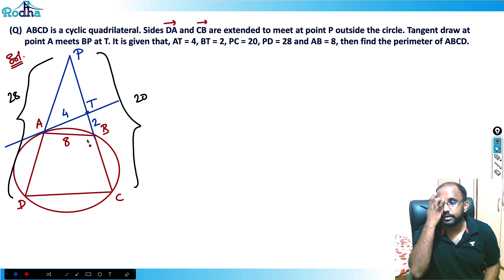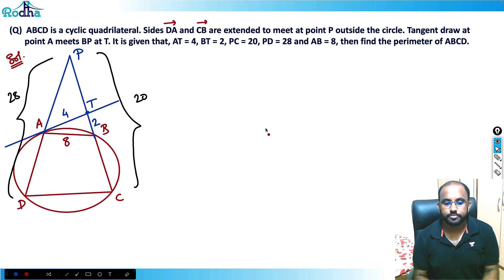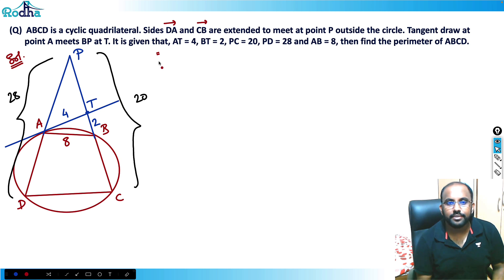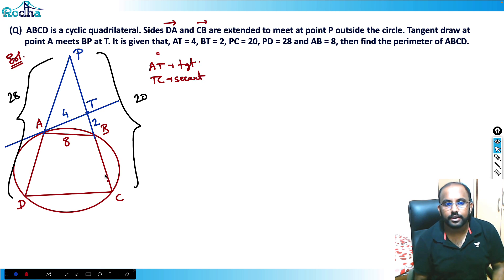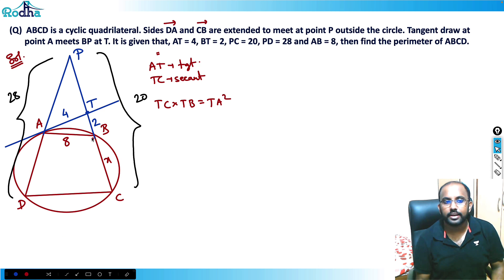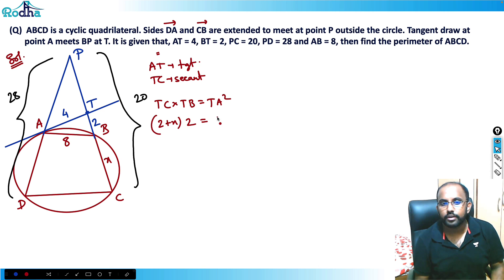AT is a tangent and TC is a secant, so I apply the tangent-secant theorem: TC × TB = TA². Let BC = X, so TC = 2 + X. Then (2 + X) × 2 = 16, which gives X = 6. So BC = 6.